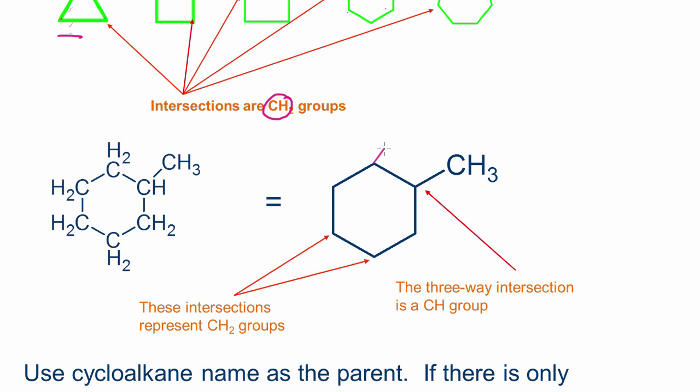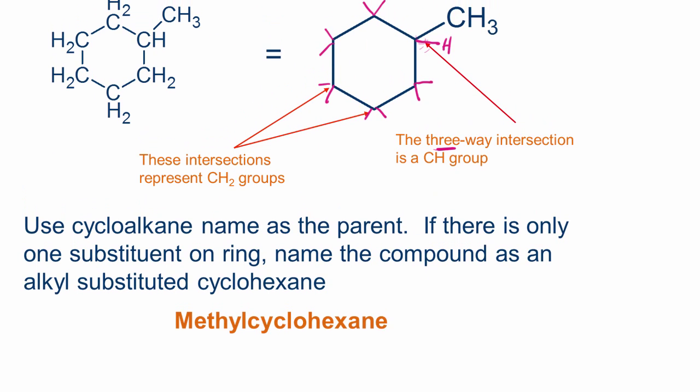Don't forget that each one of these carbons has two hydrogens bonded to it. This means that this carbon here has a methyl group, but it also has a hydrogen here. Keep in mind those hydrogens are there. In this three-way intersection, we have a CH group.